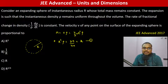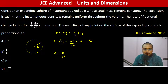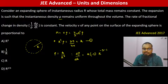The expansion is such that the instantaneous density ρ remains uniform throughout the volume. Therefore the rate of fractional change in density — it is mentioned that 1/ρ · dρ/dt is constant. So ρ is k divided by r³ as we saw. Therefore we can write dρ/dt is equal to k times minus 3r to the power minus 4, multiplied by dr/dt.